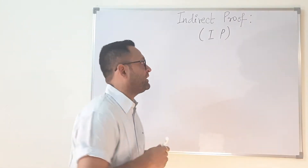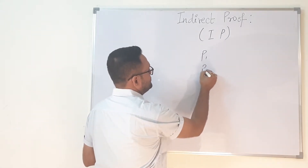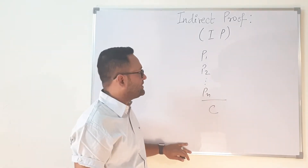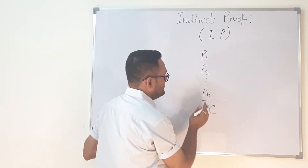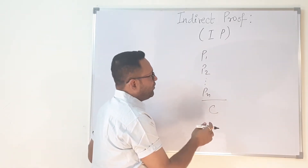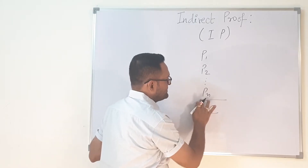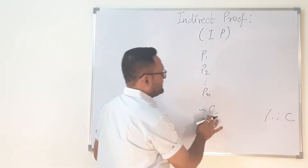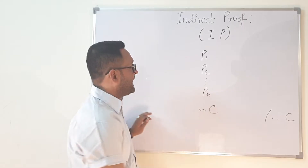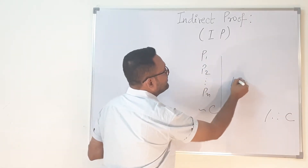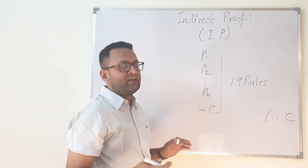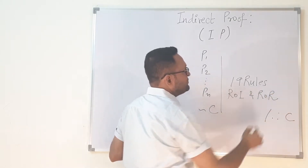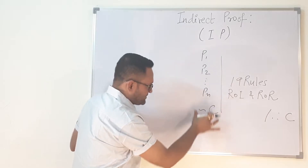Suppose you are given premises 1, 2, up to n, and there is a conclusion. This is an argument which is given to us. What we do is that we take the negation of the conclusion and also make it a premise. We remove the conclusion, take the negation of the conclusion, and then start solving it with the help of 19 rules — the rules of inference and the rules of replacement. We use both of them and start solving.